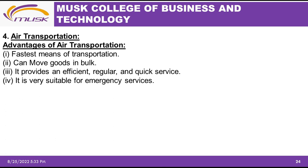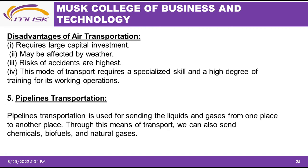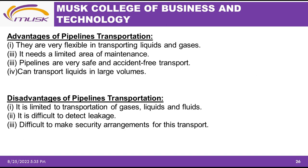Air transport is the fastest means of transport — you can read further on its advantages and disadvantages. Pipeline transport is used for transporting liquids and gases. Its advantages include flexibility in transporting liquids and gases, requiring a limited area of maintenance, being very safe and largely accident-free, and the ability to transport liquids in large volumes.